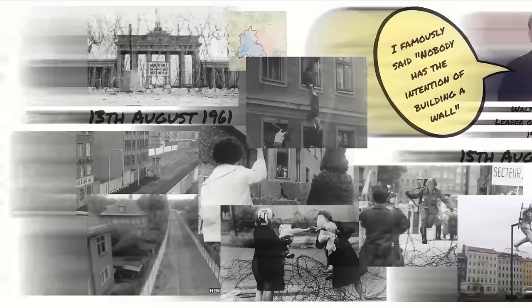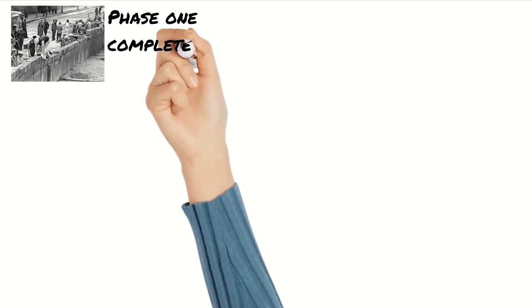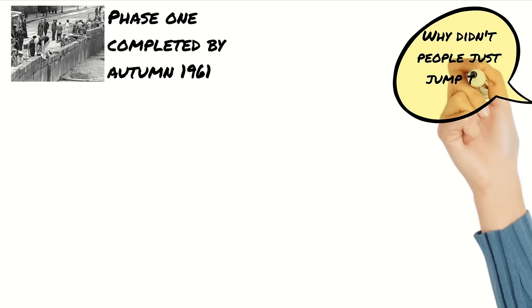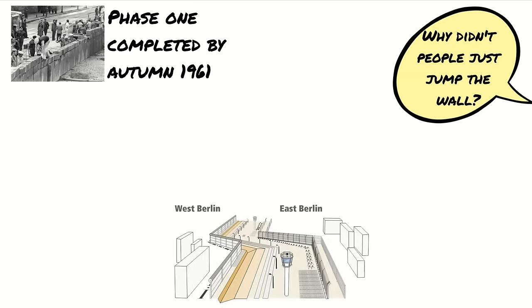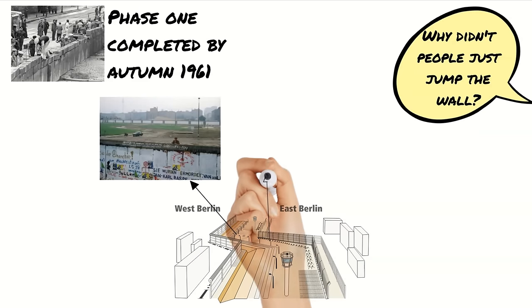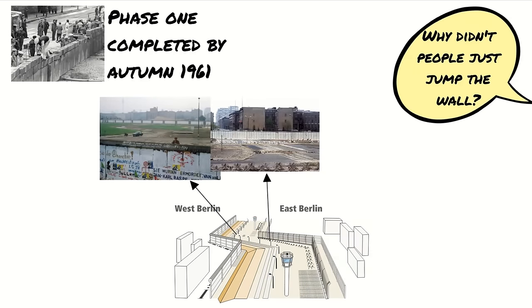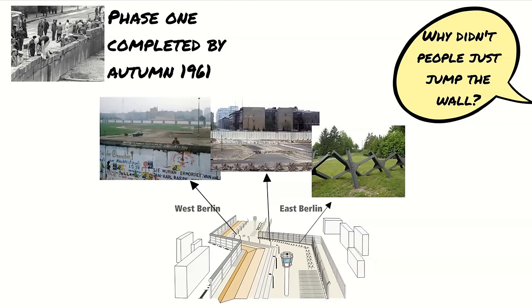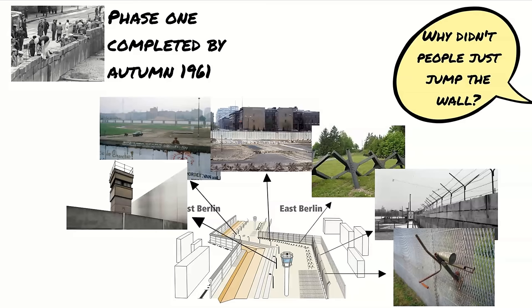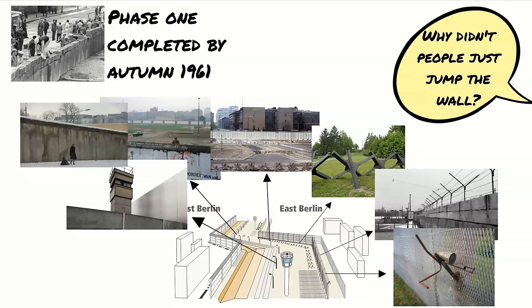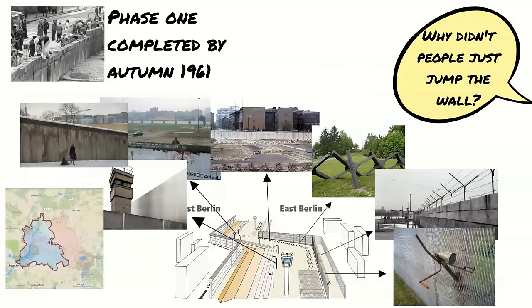The first part of the wall was completed by the autumn of 1961. One of the questions I get asked the most by students is why didn't people just climb over the wall? The answer is that it wasn't really just one wall — there were two walls, divided by a no-man's land of around 100 metres. The no-man's land contained booby traps, including anti-vehicle caltrops, barbed wire, and live mines. There were hundreds of lookout towers containing heavily armed guards.